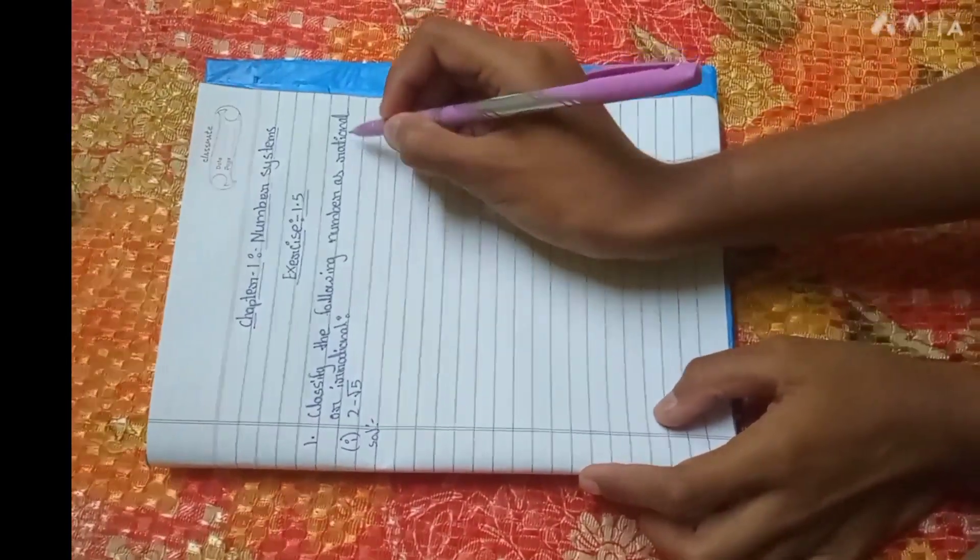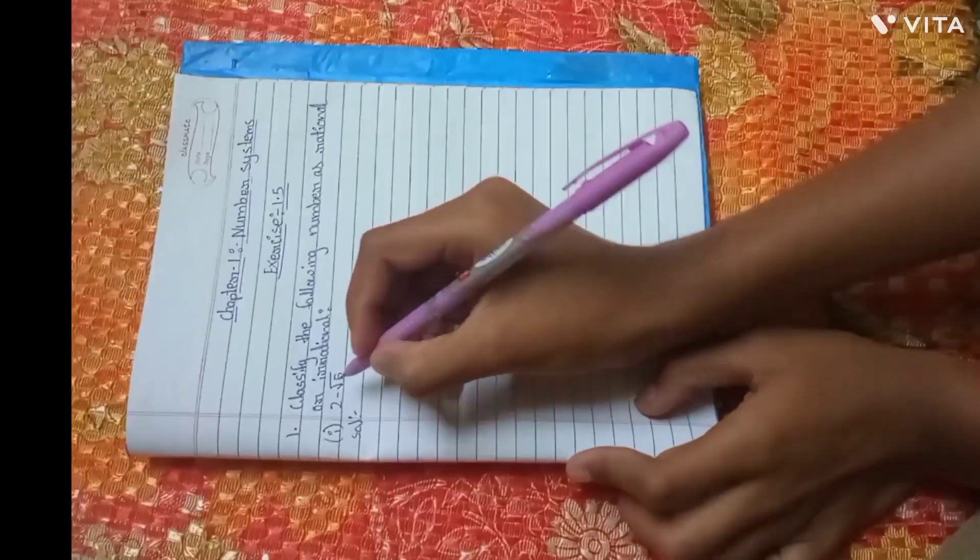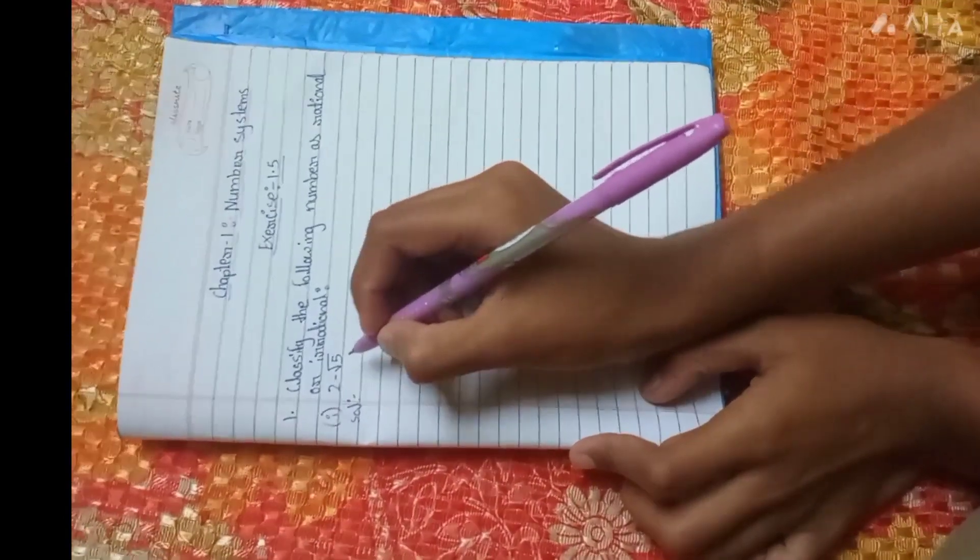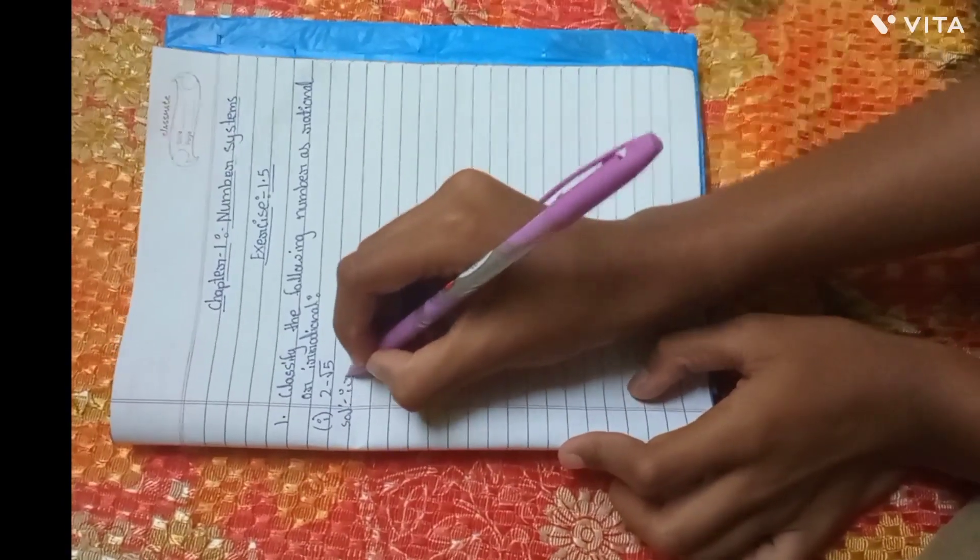Classify the following numbers as rational or irrational. First have 2 minus root 5. We can see that this will be irrational. Let's write here irrational.